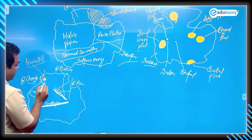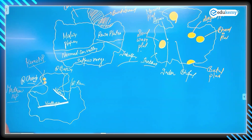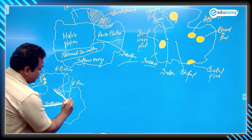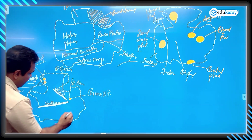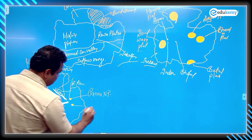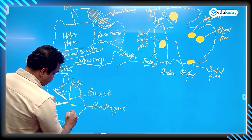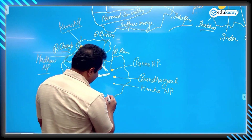For Cheetah relocation, Kuno National Park is also here. One park adjoining Kuno is Madhav National Park. Here we have Panna National Park, also known for its minerals. We have Bandhavgarh National Park as well. Kanha National Park is to the south. Here we have Pench - both a Tiger Reserve and a National Park.